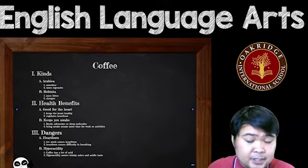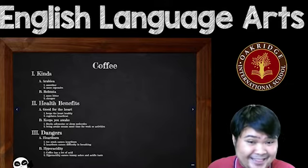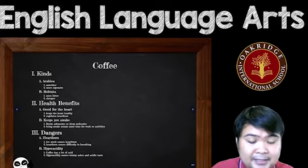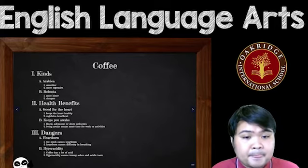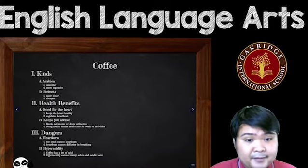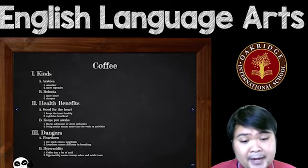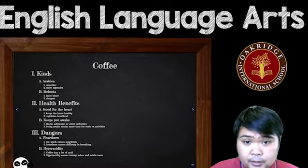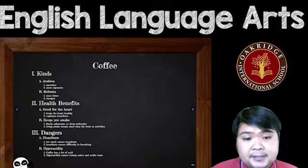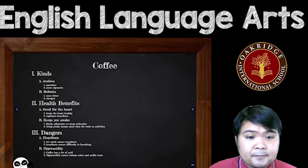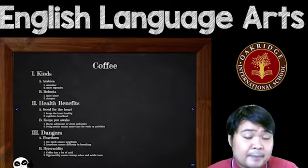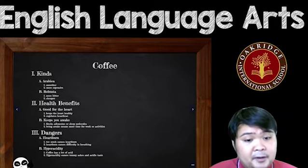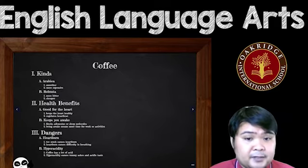How it works is: you create a topic outline like this, and then you fill in the details into separate paragraphs. For example, 'kinds' will be one paragraph, 'health benefits' would be another paragraph, and 'dangers' will be another paragraph. Or you could have two paragraphs for each heading — one paragraph for Arabica, one for Robusta, one for 'good for the heart,' one for 'keeps you awake,' one for heartburn, and one for hyperacidity.